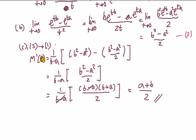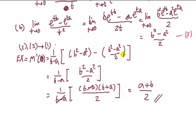So evaluating at t=0 gives us the first moment. This is the first non-centered moment, i.e., the expected value. The result is E[X] = (a + b)/2. I'll leave the second moment — and the variance result b² minus a² over 12 — to you. Get practicing with L'Hôpital, your new friend!